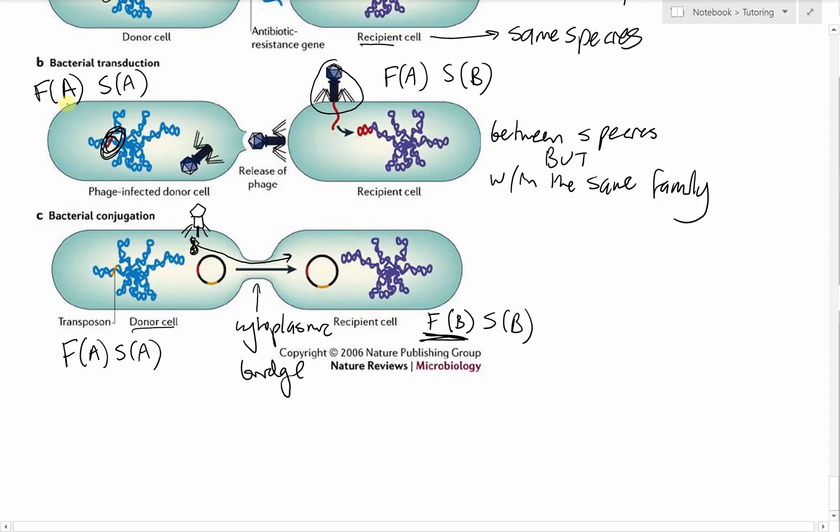This phage which is limited to family A can now infect this cell and spread the gene that it contained into family B, which then can be picked up by a family B phage and transmitted around the family continuously.